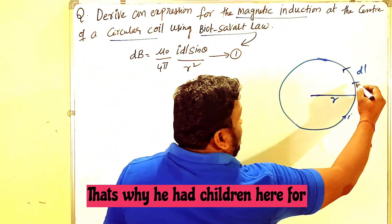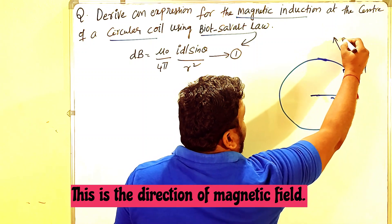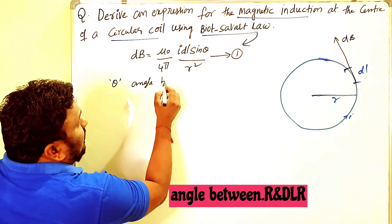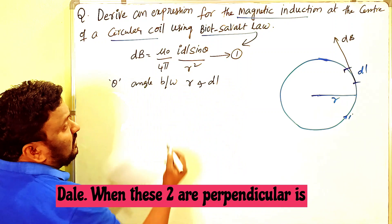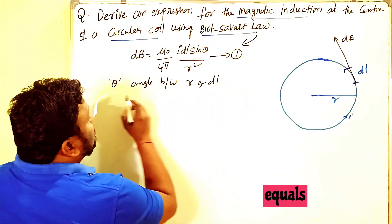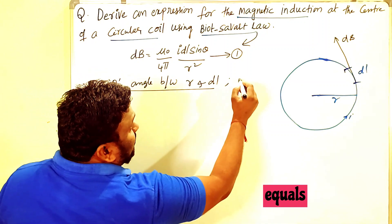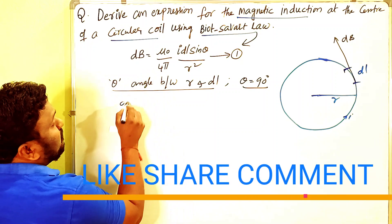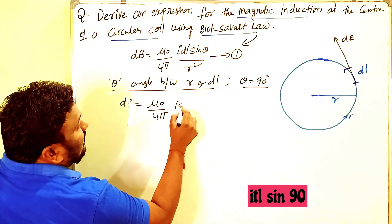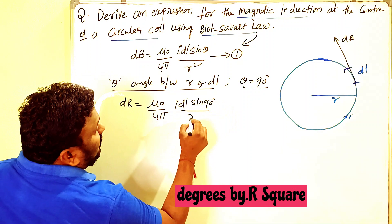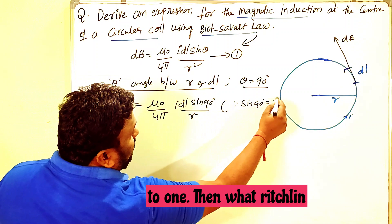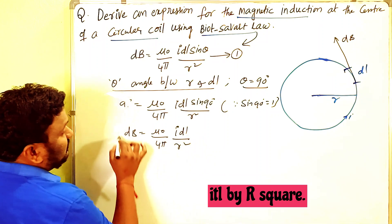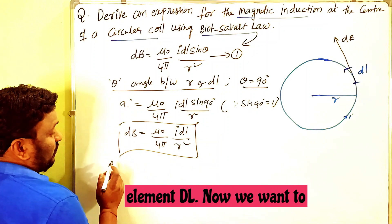The angle θ is between r and dl. When r and dl are perpendicular to each other, we write: dB = (μ₀/4π) × (I dl sin90°) / r². Since sin90° = 1, this simplifies to dB = (μ₀/4π) × (I dl / r²). This is the magnetic induction due to element dl.